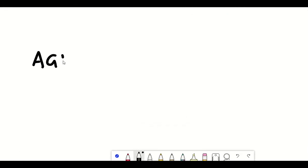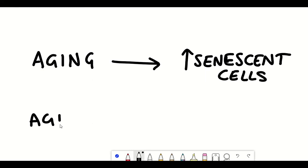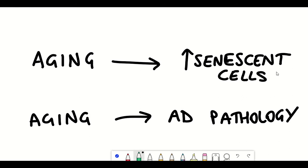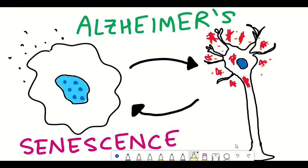Given that increasing age increases the number of senescent cells and that increasing age increases the pathology and risk potential for the development of Alzheimer's disease, is it possible that senescent cells could contribute to the pathology of Alzheimer's disease or could the pathology of Alzheimer's disease induce senescence?